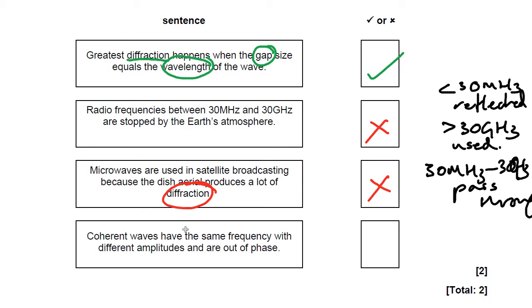And lastly, coherent waves. This means waves that can interfere with another and be constructively interfered or destructively interfered have the same frequency with different amplitudes and are out of phase.